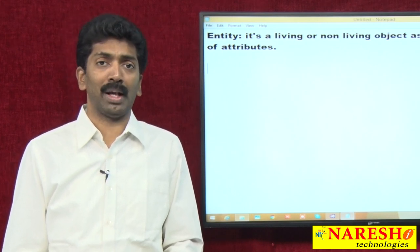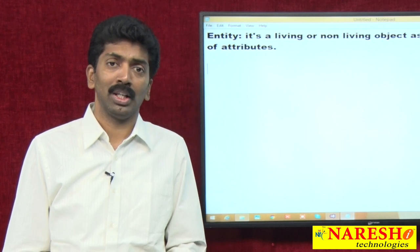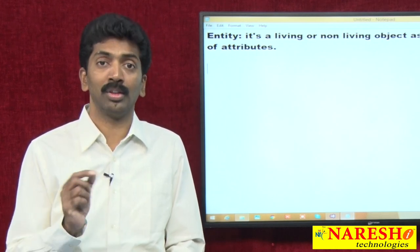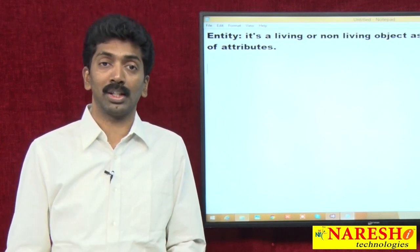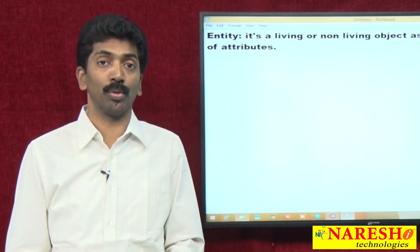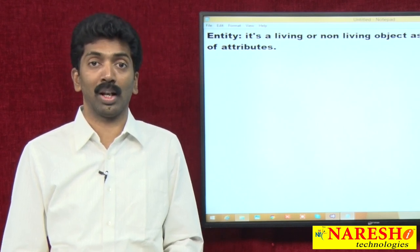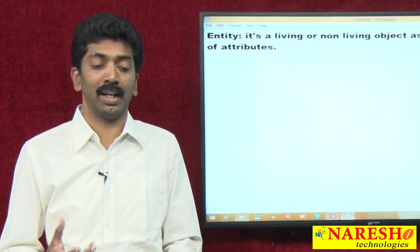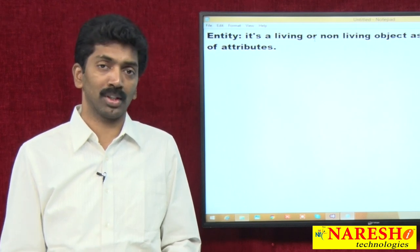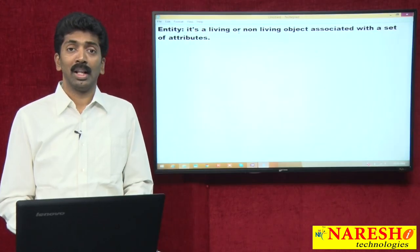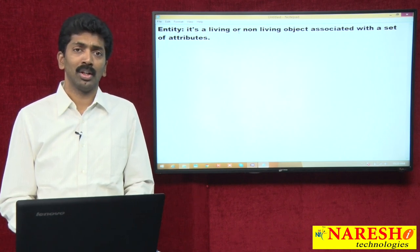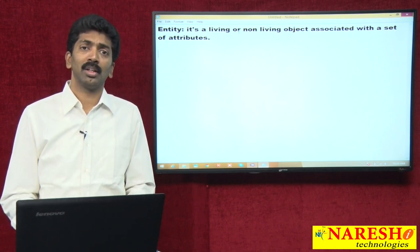Can I call a pen as an entity? Yes, you can. It has a color, a height, a diameter, a price, a company that manufactured it, and a model number — all these things can be called attributes of a pen. These are non-living entities. Coming to living objects, what are the living entities? A student is a living entity.